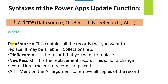The data source contains all the records — it may be a table or collection. Old record is the record you want to replace, and new record is the replacement record. The entire record is replaced, not just changed. The All argument is used to remove all copies of the record.